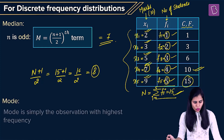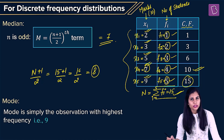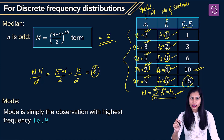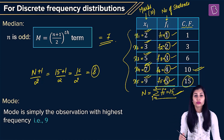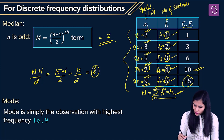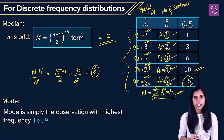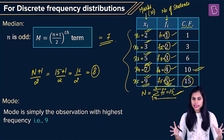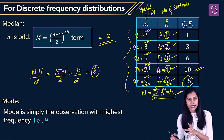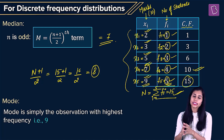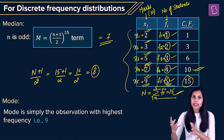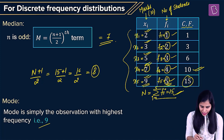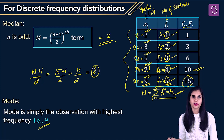Next up is mode. It is again that particular observation which occurs the maximum number of times. In this data set, the distinct terms are 2, 3, 5, 7, and 9, out of which 9 is occurring the maximum number of times — that is 5 times, with frequency 5. So 9 is going to be the mode of this data set.